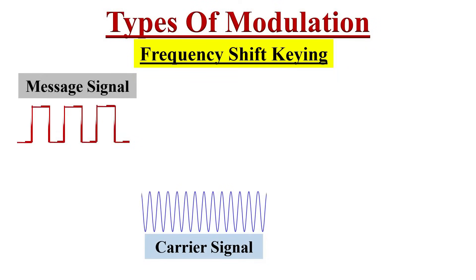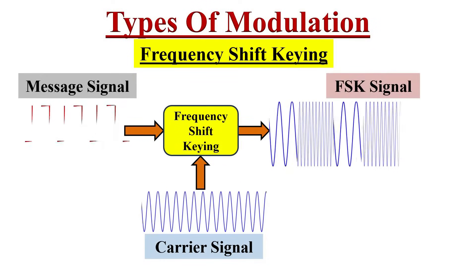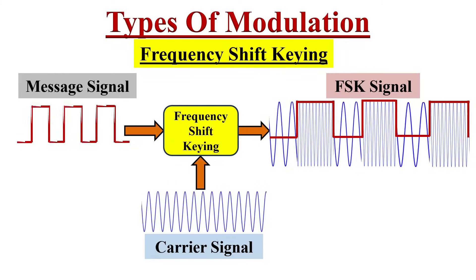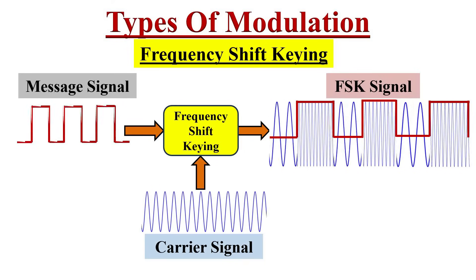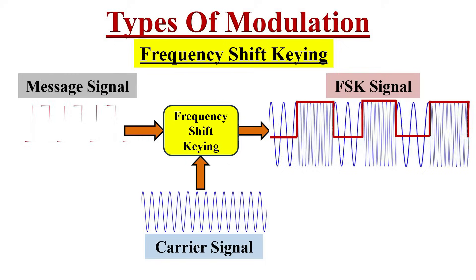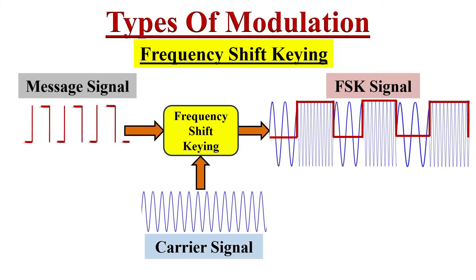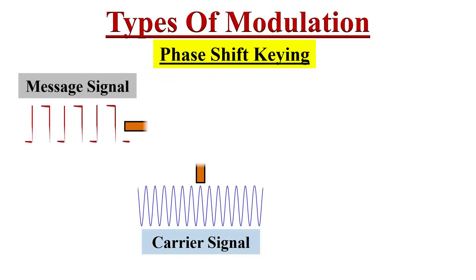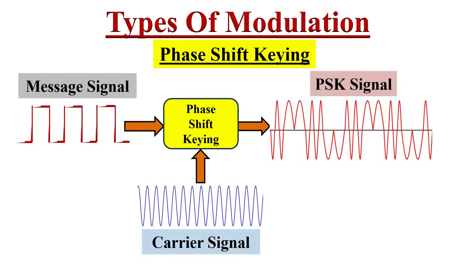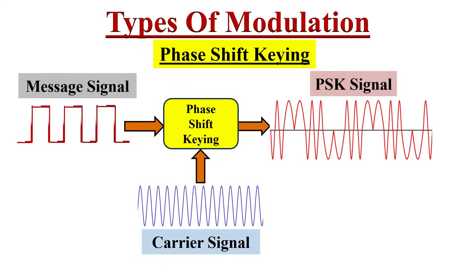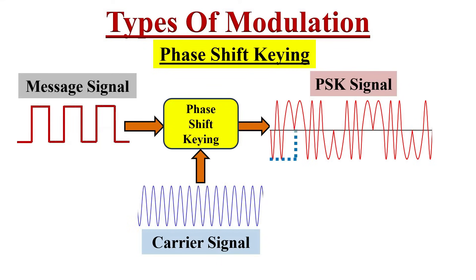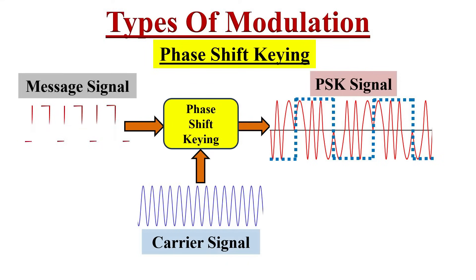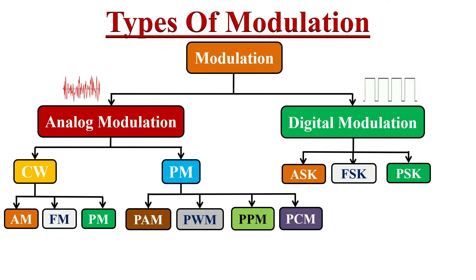In frequency shift keying (FSK), both the digital message signal and the analog carrier wave are superimposed such that the frequency of the modulated signal varies according to the digital message signal. Binary 1 is represented with high frequency and binary 0 with low frequency. In phase shift keying (PSK), both the digital message signal and analog carrier wave are superimposed such that whenever the message signal changes from 1 to 0 or 0 to 1, there is a 180-degree phase shift in the modulated signal. That covers digital and analog modulation techniques.